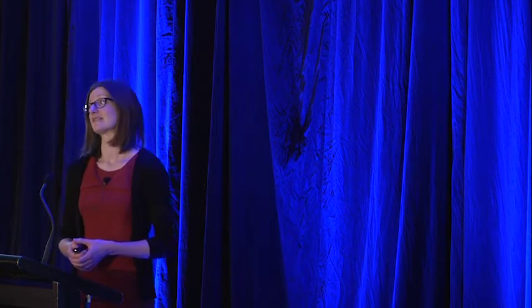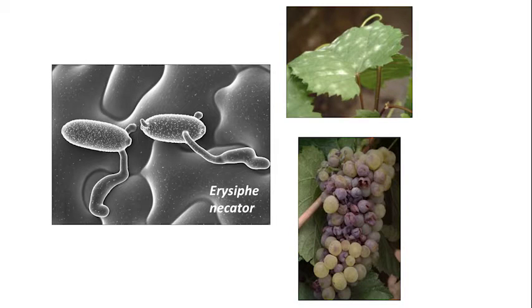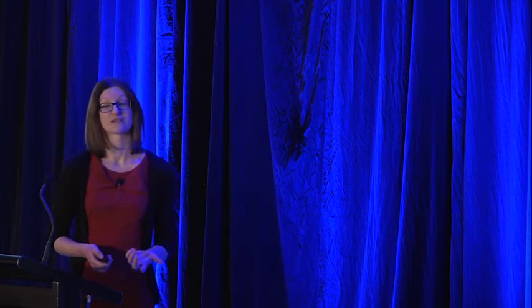Here at Waite, we're researching parasites of grapevine, which is a crop of huge economic importance to South Australia. One of the parasites that grapevine's immune system can't kill is a parasite called Erysiphe necator. This is a fungal parasite and it causes powdery mildew disease. Any of you who are keen gardeners have probably come across powdery mildew disease before, particularly if you try growing roses, strawberries, or cucumbers. Erysiphe necator can infect both the leaves and the berries of grapevine, and even just low levels of powdery mildew disease are enough to have severe effects on both the yield and the quality of the berries, which will affect the quality of wine production.